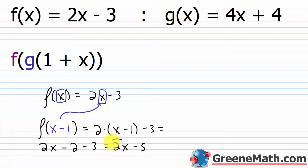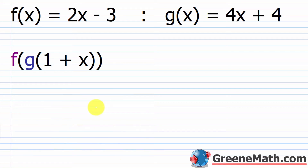I didn't get a numerical value there, but I still found what the function would be when plugging in x minus 1 for the independent variable x. That's all we're really doing here — just plugging things in and simplifying. For the first example, we're given f of x equals 2x minus 3, and g of x equals 4x plus 4. What we want to find is f of g of 1 plus x.